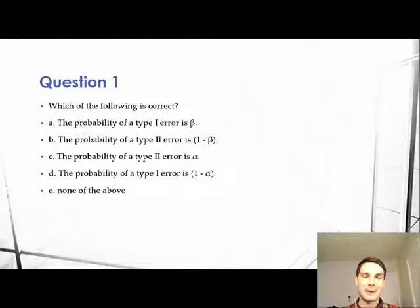Question one reads: which of the following is correct? A: the probability of a type 1 error is beta. B: the probability of a type 2 error is 1 minus beta. C: the probability of a type 2 error is alpha. D: the probability of a type 1 error is 1 minus alpha. Or E: none of the above.